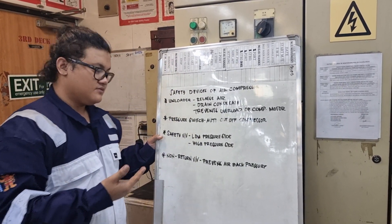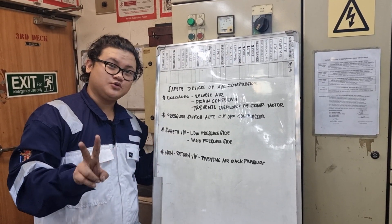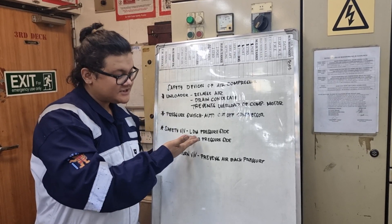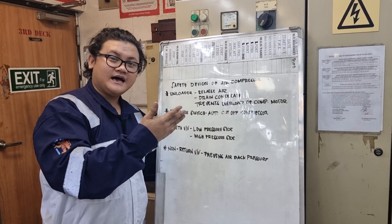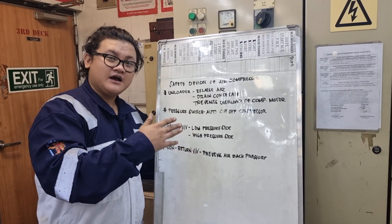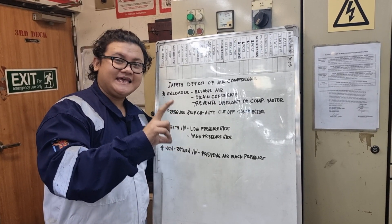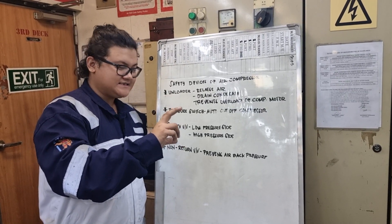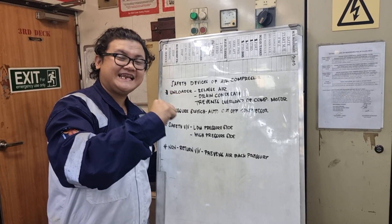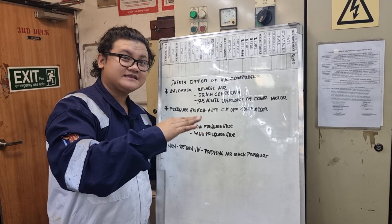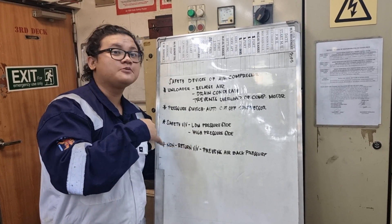Now, the third one: safety valve. We have two safety valves attached in the compressor — low pressure side and high pressure side. Both of them have the same use, which is if the safety valve's capacity is 50 kg, once it reaches that pressure, it automatically releases the air. That might cause your compressor to be damaged.